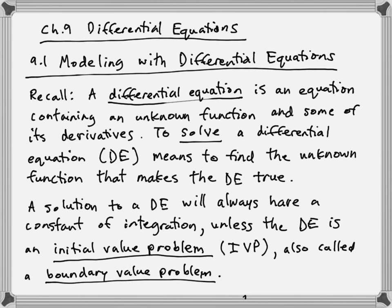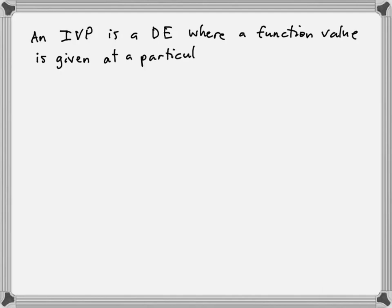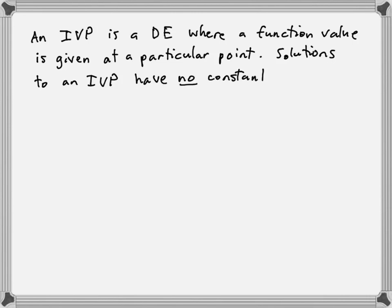So what is an initial value problem? An initial value problem is a special type of differential equation where a function value is given at a particular point. Importantly, solutions to an IVP have no constant of integration.